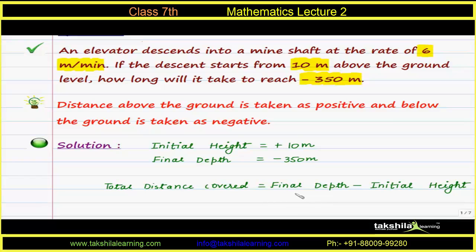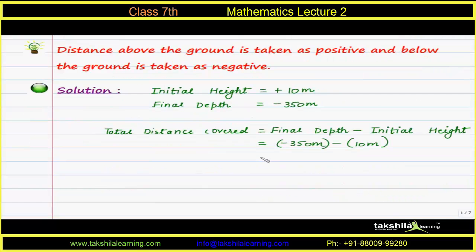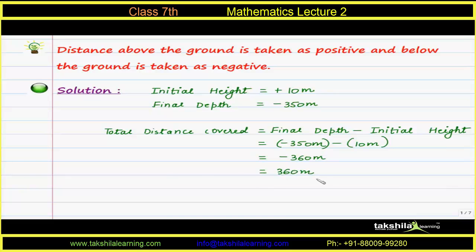Total distance = final depth − initial height = (−350) − (10) = −360 meters. Since distance cannot be negative, we take the positive value, so the actual distance covered is 360 meters.